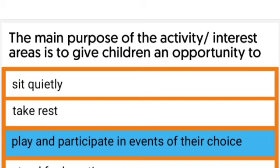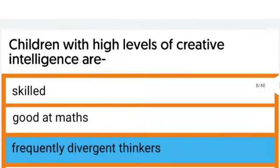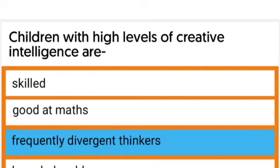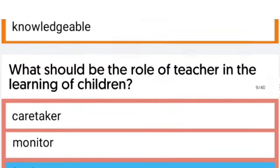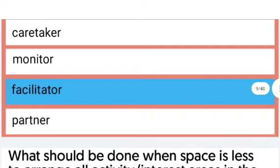Children with high levels of creative intelligence are frequently divergent thinkers. The next question: What should be the role of the teacher in the learning of children? The role of the teacher in the learning of children is as facilitator.